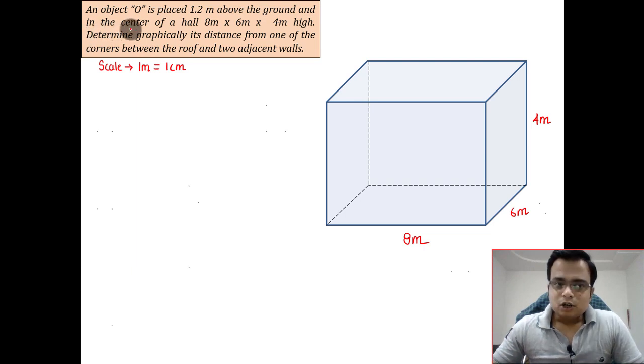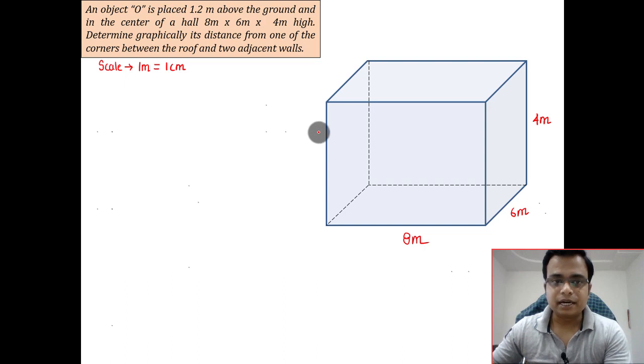So there is an object right at the center of the hall, 1.2 meters high. This is the center of the hall, and from here we need to go upwards by a distance of 1.2 meters.